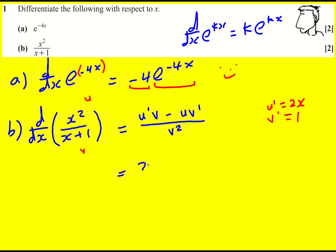So for us it's 2x times x plus 1 minus x squared times 1. So I could just leave it as x squared. All over x plus 1 all squared.